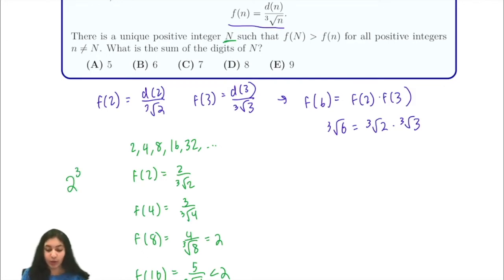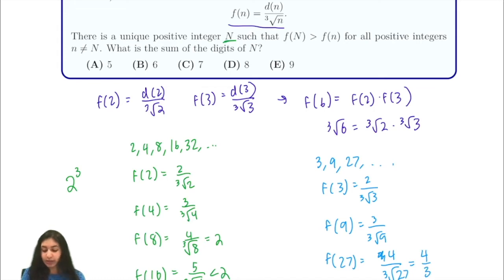Now let's look at our powers of 3: we have 3, 9, 27 and so on. f(3) is equal to 2 over the cube root of 3, f(9) is equal to 3 over the cube root of 9, f(27) is equal to 4 over the cube root of 27, this is just 4 over 3. We'll notice that f(9) is actually larger than 4 over 3.